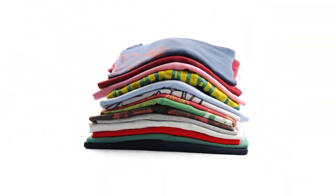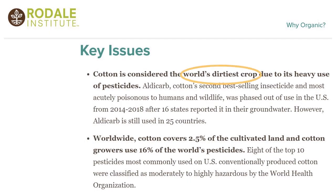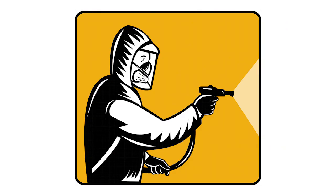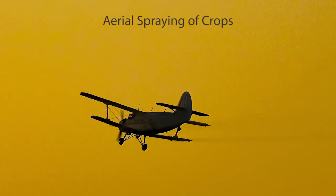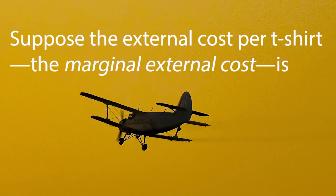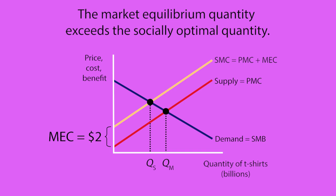What can we do to fix this problem? No solution is ideal for every situation, but let's consider five approaches that can work under the right circumstances. We'll begin with a look at the market for cotton t-shirts, which cause negative externalities in part because most cotton production involves the use of insecticides, herbicides, and fossil fuels that cause harm to people not involved in making or buying t-shirts. Suppose the marginal external cost is $2 per t-shirt, and the private market would produce 3 billion t-shirts per year in the absence of other influences. The socially optimal quantity is 2 billion because every t-shirt beyond 2 billion costs society more than the value of its benefit.